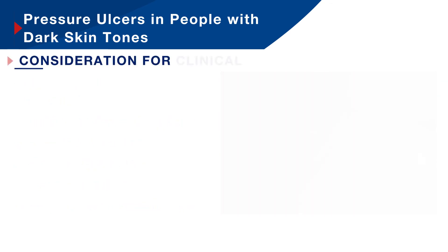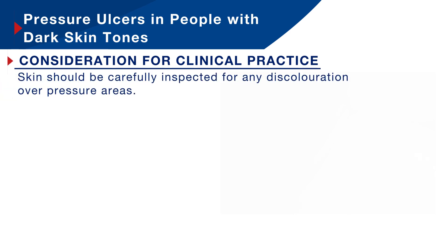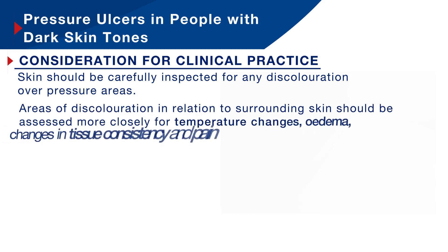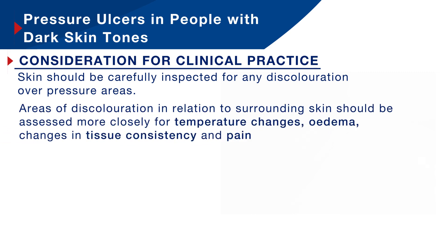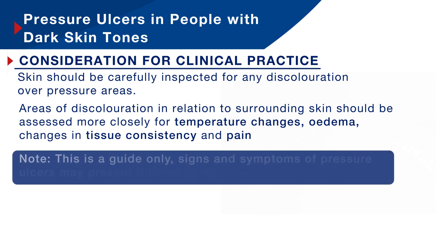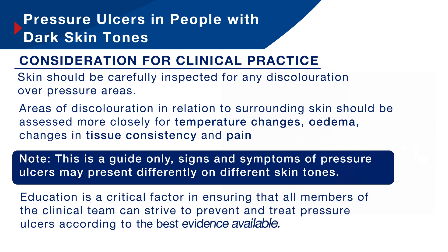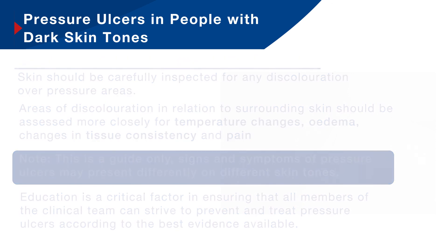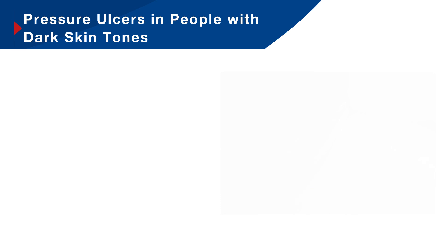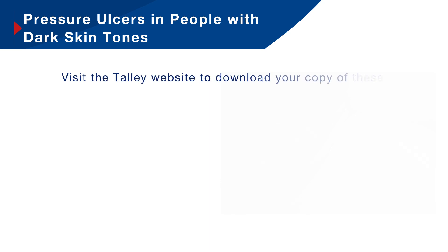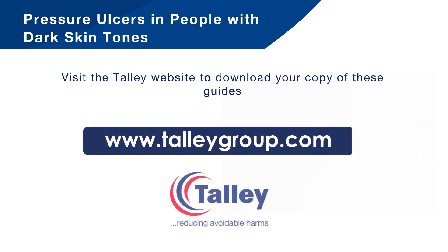Considering clinical practice: skin should be carefully inspected for any discolouration over pressure areas, and areas of discolouration in relation to surrounding skin should be assessed more closely for temperature changes, oedema, changes in tissue consistency and pain. It is also important to note that this is a guide only and signs and symptoms of pressure ulcers may present differently on different skin tones. Education is a critical factor in ensuring that all members of the clinical team can strive to prevent and treat pressure ulcers according to the best evidence available. If you would like a copy of the pressure ulcer classification guides, please visit our website, which is shown here on the screen.